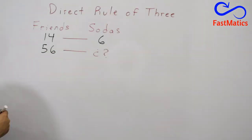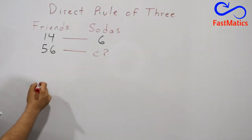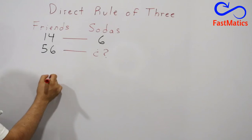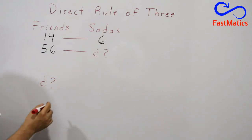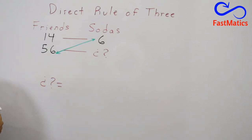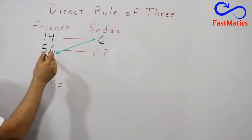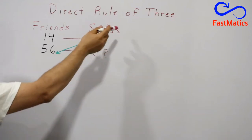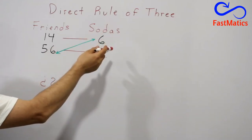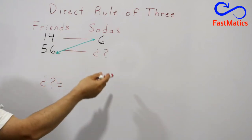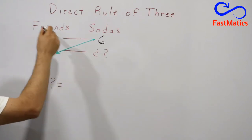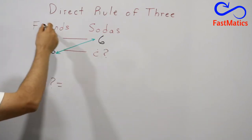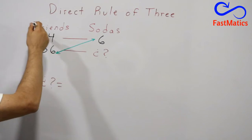How to solve it? It's very simple. In order to find the unknown value, we're going to multiply the numbers that have a couple diagonally, and the result is going to be divided by the number that doesn't have a couple diagonally.